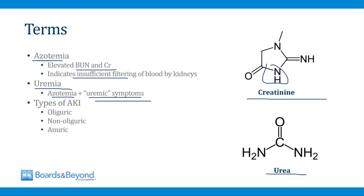Uremia is a clinical syndrome consisting of symptoms related to poor renal function. AKI can also be categorized based on how much urine the kidneys are producing. In oliguric AKI, the kidneys are producing some urine but less than normal. In non-oliguric AKI, the BUN and creatinine rise but there's no drop-off in urine production. And in anuric AKI, the kidneys are producing no urine.